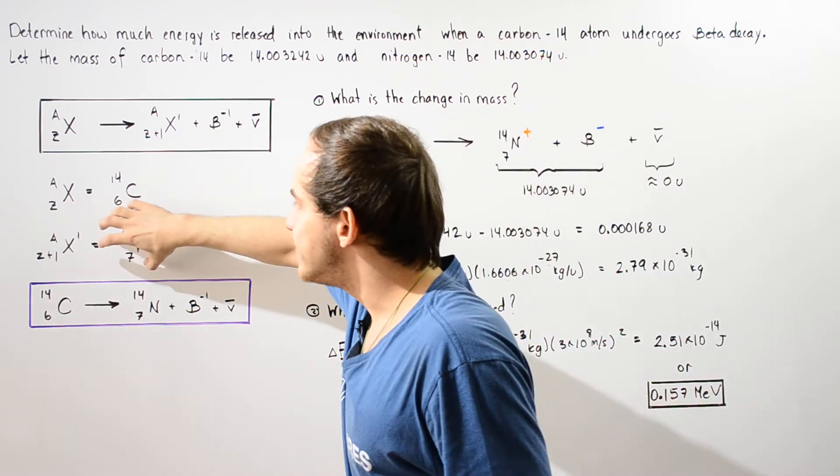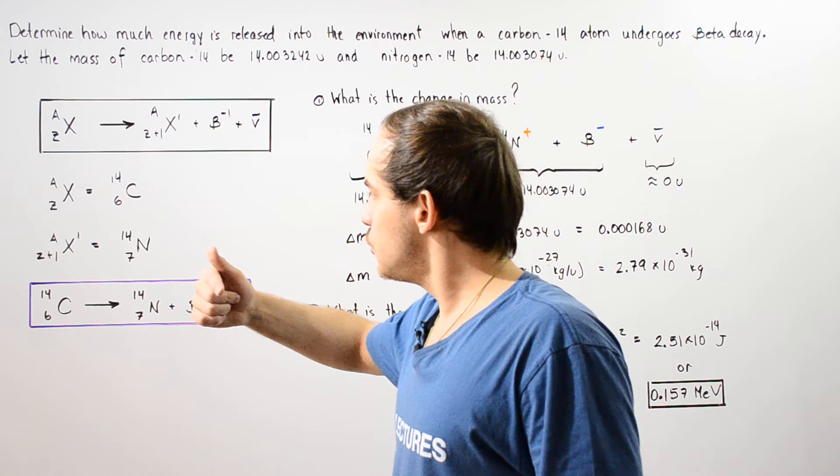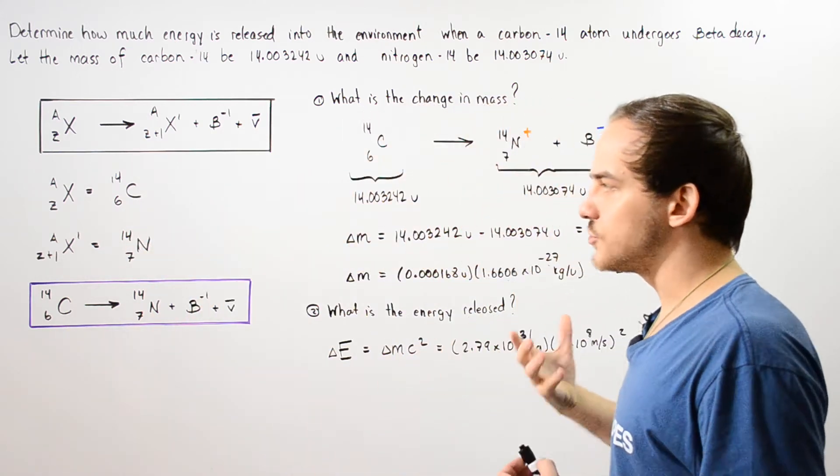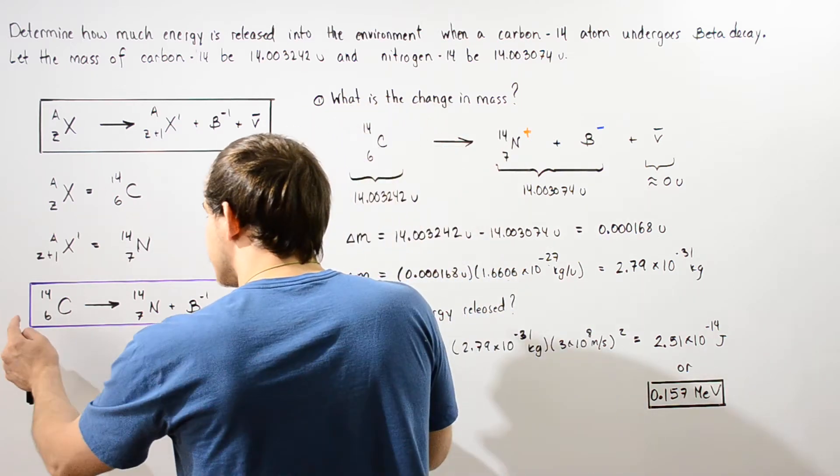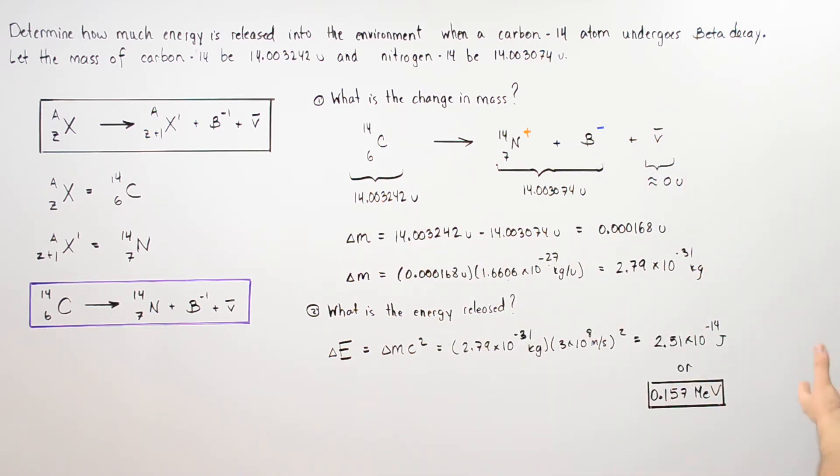So this nitrogen has one more proton, one less neutron, but the total number of nucleons remains unchanged. It's still 14. So that means this is our formula that describes this particular beta decay.